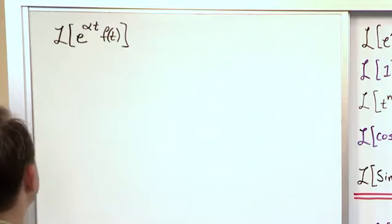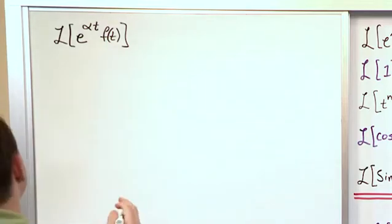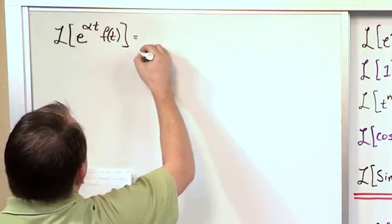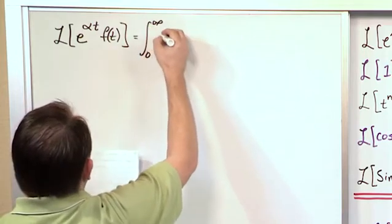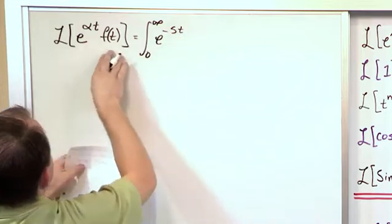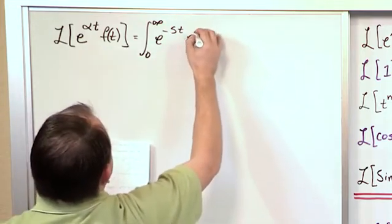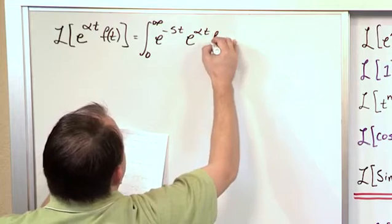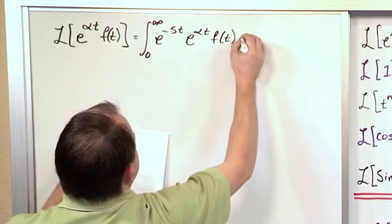So what would we do? I could just write the property down. But what you would do if you were trying to derive it is you would take the integral from zero to infinity of e to the minus s t times whatever you're trying to take the transform of. In this case e to the alpha t times f of t dt.